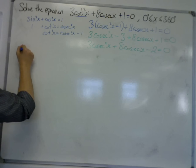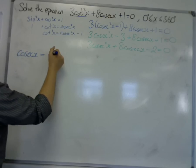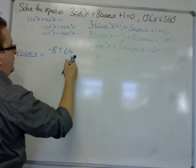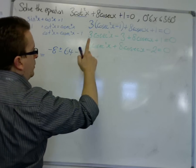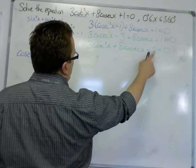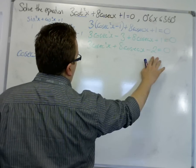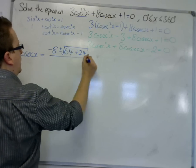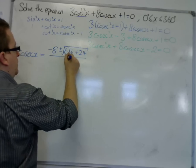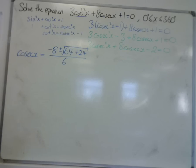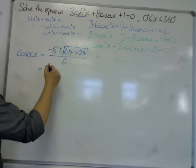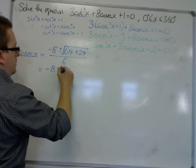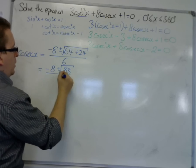cosecx equals -b ± √(b² - 4ac) over 2a. That's -8 ± √(64 - 4×3×(-2)) over 6. So that's -8 ± √(64 + 24) over 6, which is -8 ± √88 over 6.